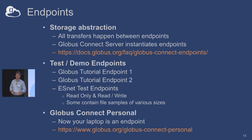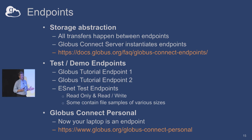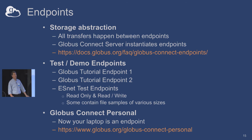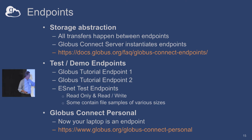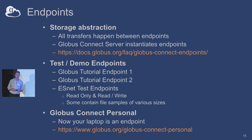Before the demo, a couple things to cover. First: an endpoint. You'll hear that mentioned a lot in Globus — an endpoint is simply our storage abstraction. A Globus transfer goes from endpoint A to endpoint B. Just think of it as a storage area with directory structures. If you don't have any endpoints, there are demo and tutorial endpoints available you can read and write from. Eli's got the ESNet test endpoints with different file sizes — great for testing performance when you set up your endpoint.